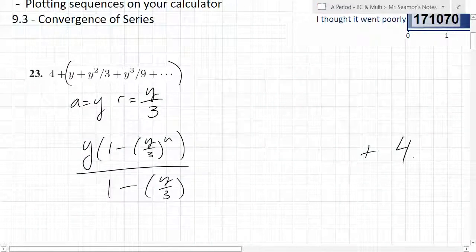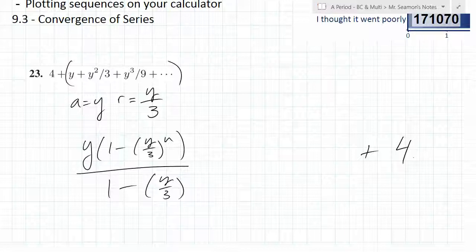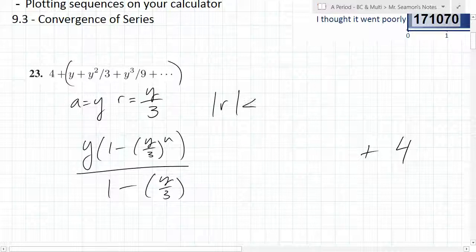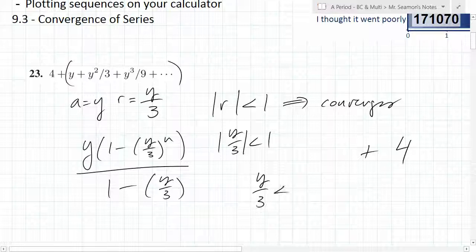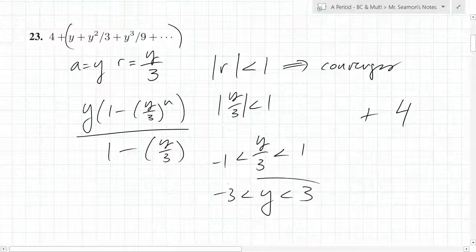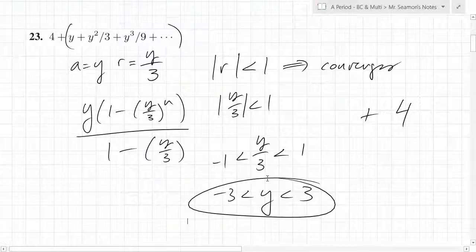Here's the thing — we don't know what the absolute value of y over 3 is. y over 3 is the ratio. Yes, the absolute value of that has to be less than 1 for it to converge. So you know that the ratio is y/3, so for this to converge, y/3 needs to be between -1 and 1, meaning y is between -3 and 3.